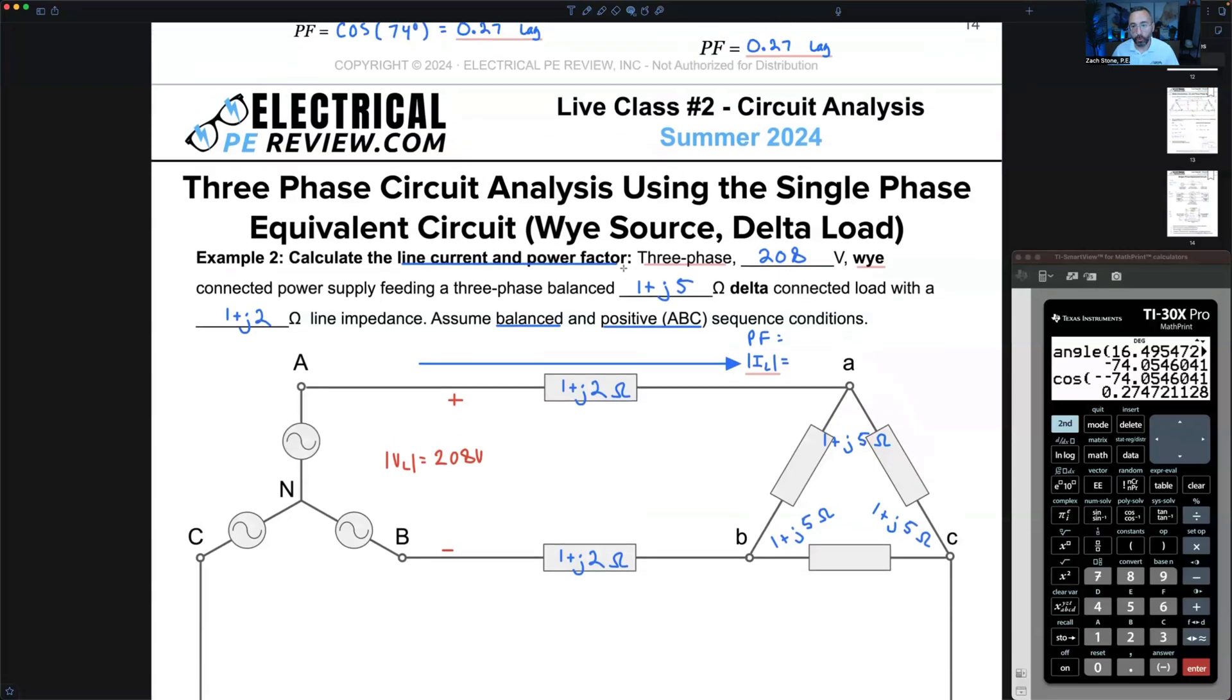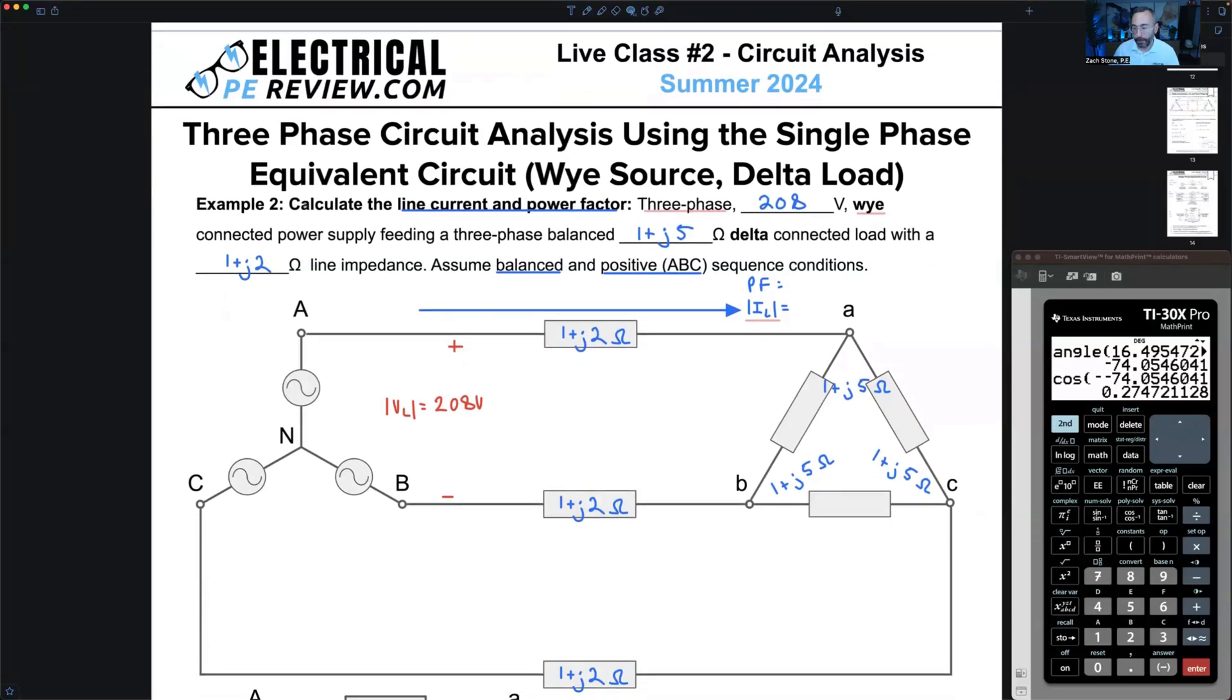Example number two, we're at the top of page 15. Calculate the line current and power factor from a 208 volt three phase Y connected power supply. Now we've got a delta connected load.